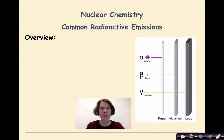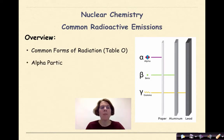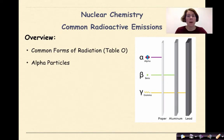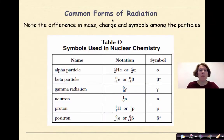Hi, welcome to nuclear chemistry. My name is Dr. English. Today we're going to be talking about common radioactive emissions — specifically common forms of radiation — and we're going to be referring to Table O of your reference table: alpha particles, beta particles, positron particles, and gamma radiation.